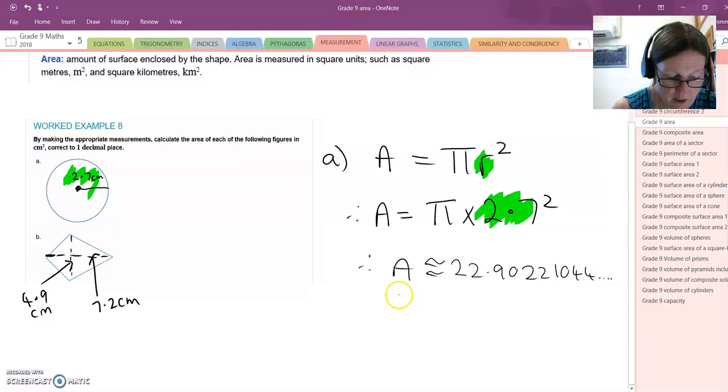And that area is approximately 22.90221044. Keeps going. Let's round it off to 1 decimal place like it says. So it's approximately, there's the first decimal place. We look at the second one. It's less than 5, so we leave this first one as is. The area is approximately 22.9 centimetres squared.